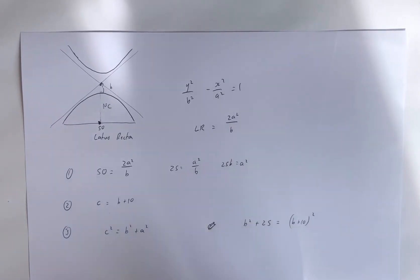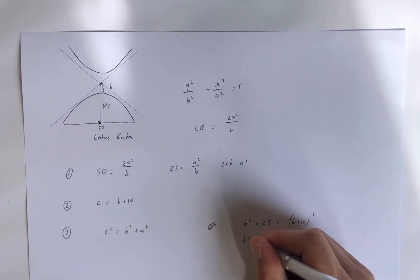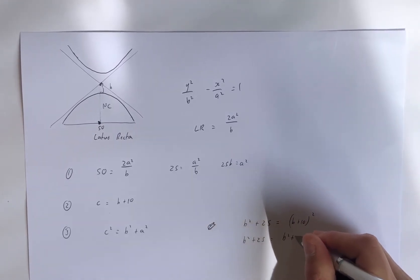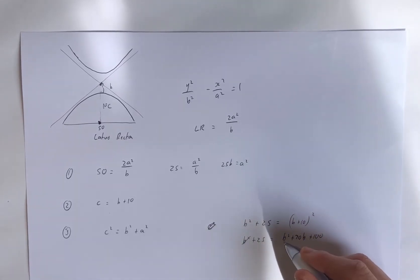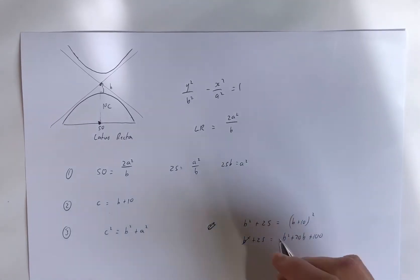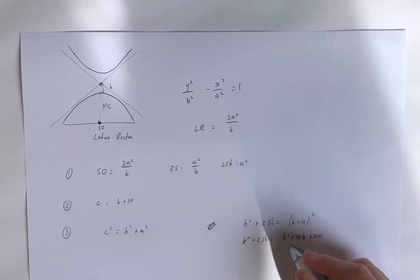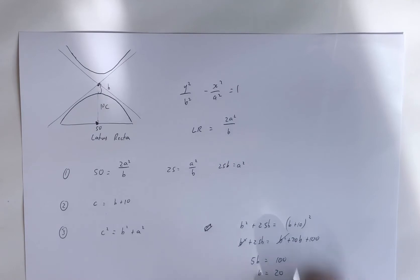Now we can solve for b. It's just a quadratic, isn't it? So we've got b squared plus 25b equals b squared plus 20b plus 100. Sorry, 25b. Drop that. So the b squared's cancel. We can subtract 20b. We have 5b equals 100, b equals 20.